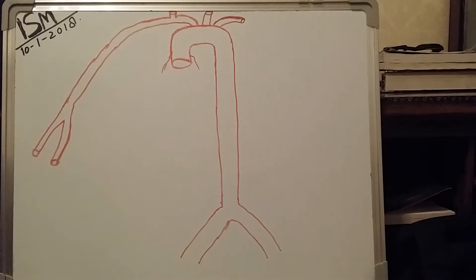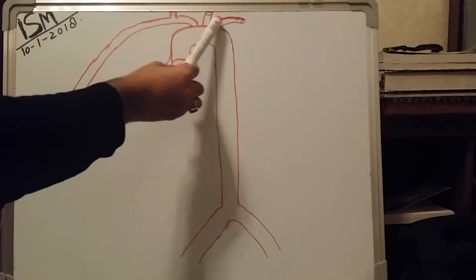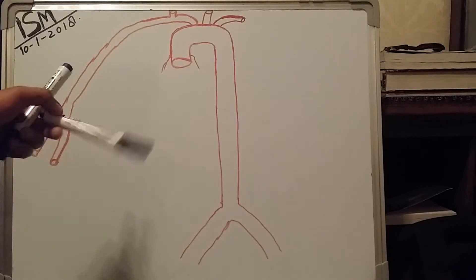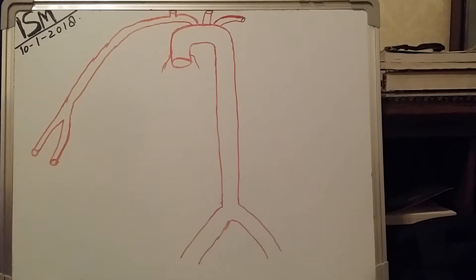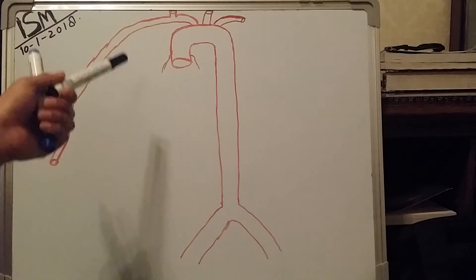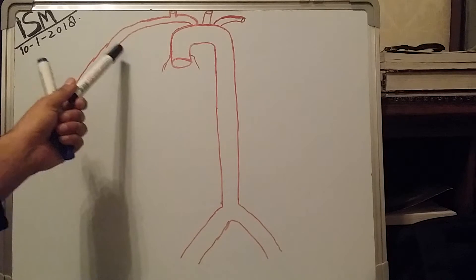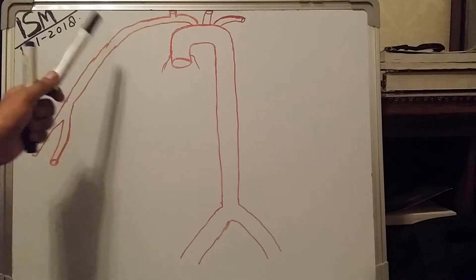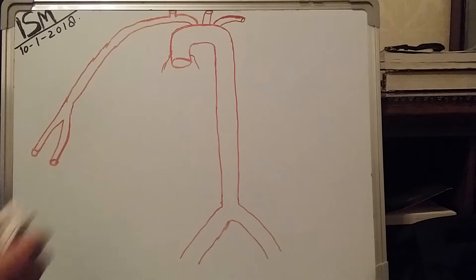So this was the ascending aorta, the arch of aorta, the descending aorta, and these are the arteries originating mainly from the arch of aorta. The first one is the left subclavian artery, then the left common carotid artery, and the third one is the brachiocephalic artery. From the brachiocephalic artery two other branches originate: the right common carotid artery and the right subclavian artery. This portion of the right subclavian artery is called axillary artery, and here they are called brachial artery, which bifurcates into radial artery and ulnar artery. So let's begin to study the branches originating mainly from the descending aorta.